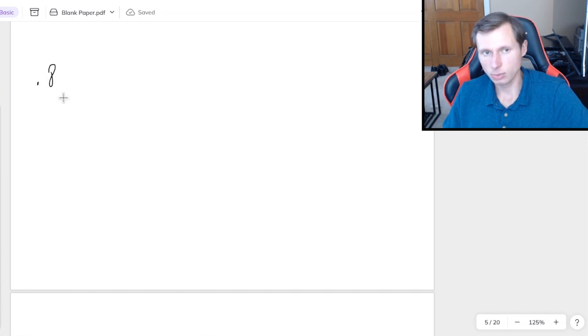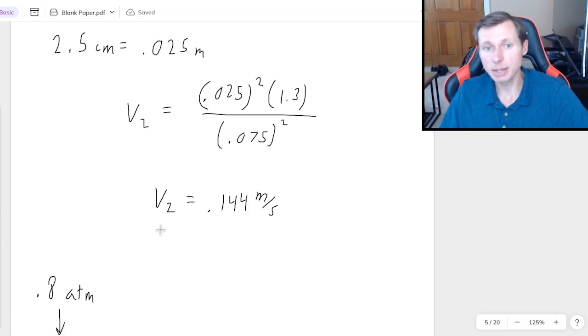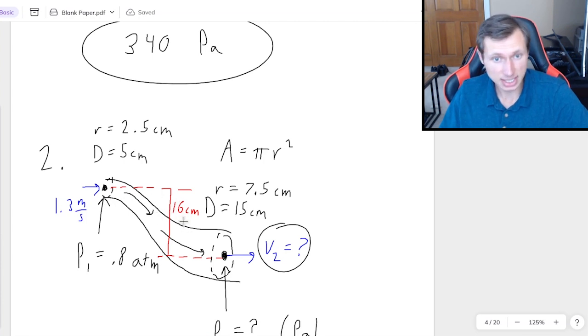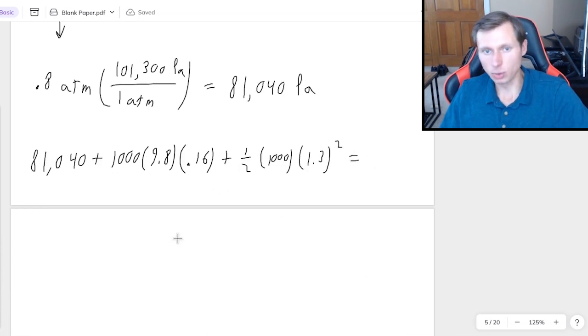And so then now I can start plugging into Bernoulli's equation. P₁, which was 0.8, which that was atm, and I still have to convert that, so 0.8 atm, I just have to do some dimensional analysis. There's one atm in 101,300 pascals, and that's going to give me 81,040 pascals, so that's P₁. 81,040 + ρgh, I forgot to mention, this is still water, so still 1,000, times g is 9.8, times the height at point 1, this is going to be the highest point, the 16 centimeters, and I do need to convert that to meters, so instead of 16, I'm dividing by 100 to get me 0.16 meters, and then + ½ρ, 1,000, V₁², velocity 1 was 1.3 and that's squared, and then I have to set this equal, which I'm going to write on the next line, to P₂.